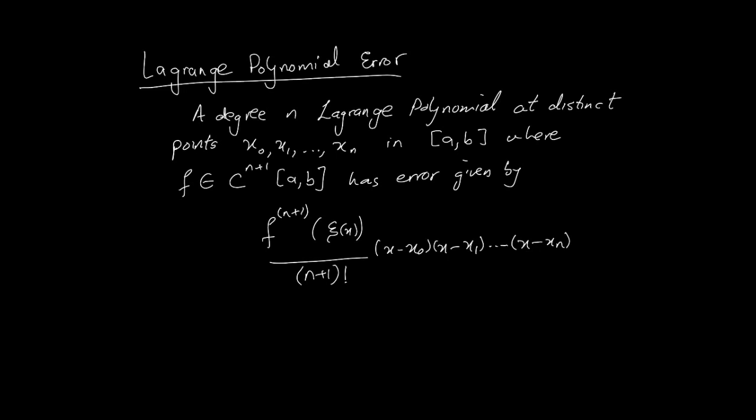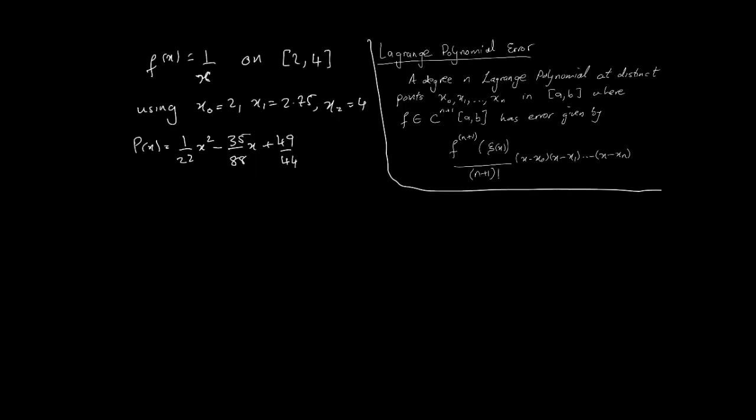Now let's look at a quick example of how this error term is calculated. This is an example that we did earlier in a previous video where we approximated f(x) equals 1 over x on the interval 2 to 4. The example is taken from Burden-Faires, the book on numerical analysis. So the data points that we were approximating on were 2, 2.75, and 4, three data points on the interval 2 to 4. We used the Lagrange polynomial to approximate 1 over x. As a reminder, I'll just put the polynomial here for you. So this was the polynomial.